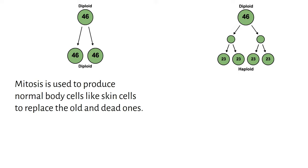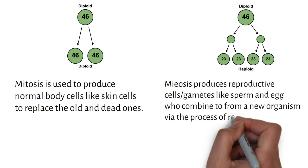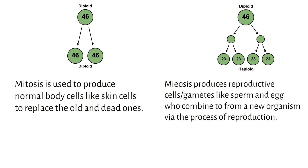These four haploid cells formed are called sex cells or gametes. Therefore, meiosis serves as a basis for producing new sexually reproducing organisms.